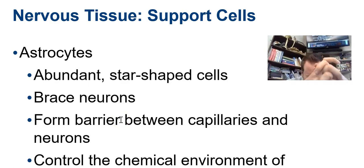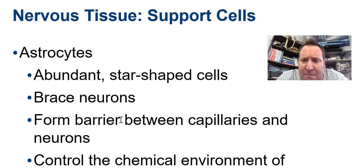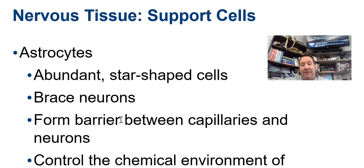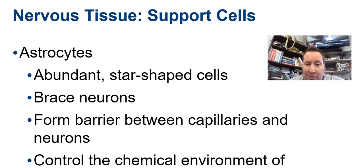The first neuroglial cell is called an astrocyte, also called an astroglial cell, because they have a star shape. About 20 to 40% of your glial cells are astrocytes, making them the most abundant glial cell. This cell type forms a barrier between the capillary and the neuron, controlling the chemical environment of the neuron, monitoring its metabolism, providing it with nutritive properties, and also bracing the neuron to hold it in place.